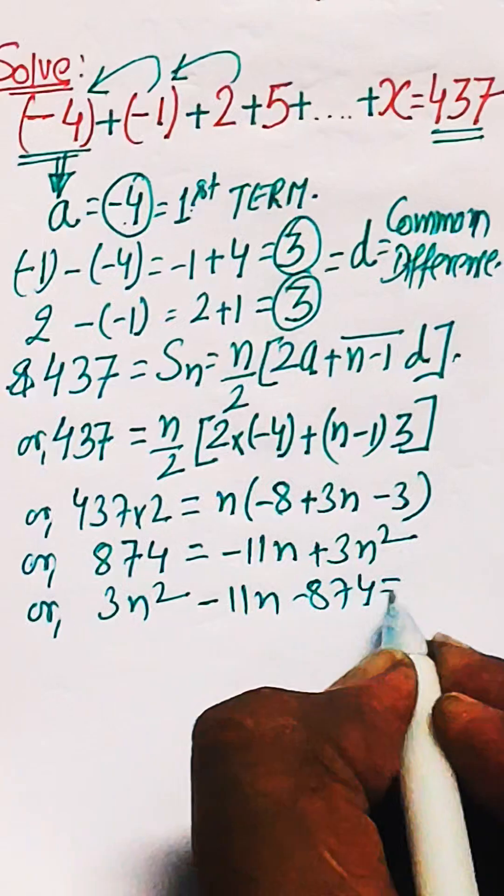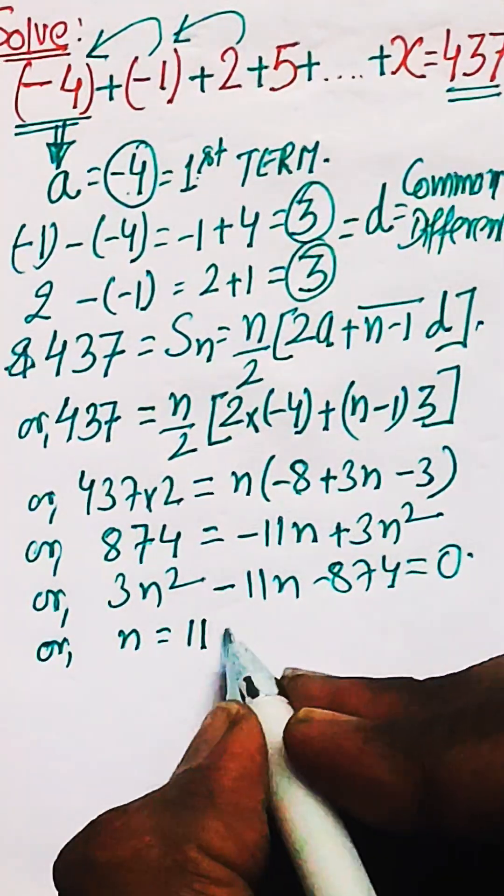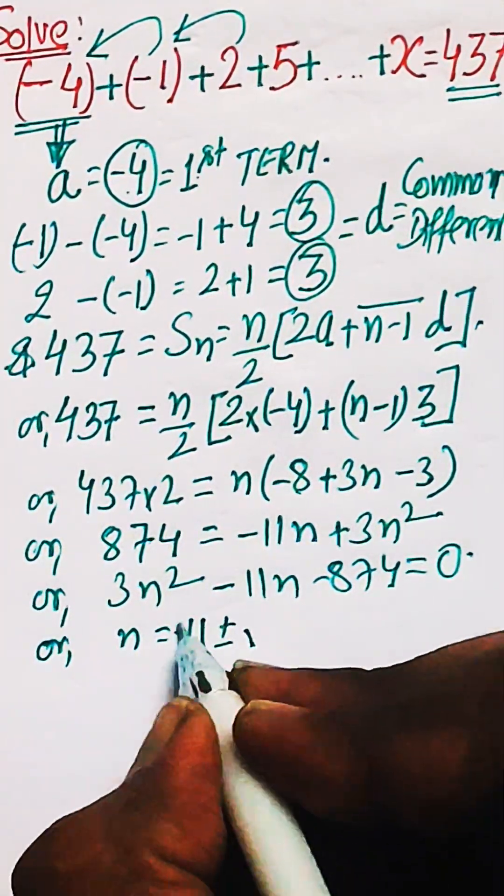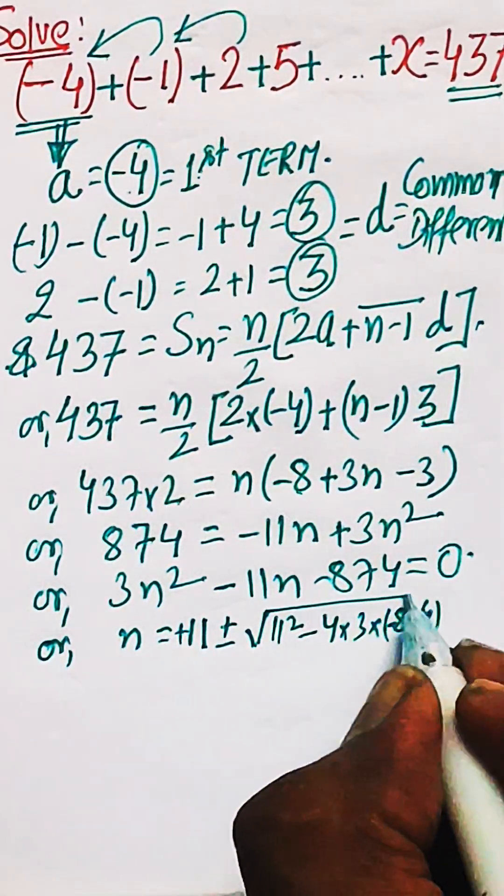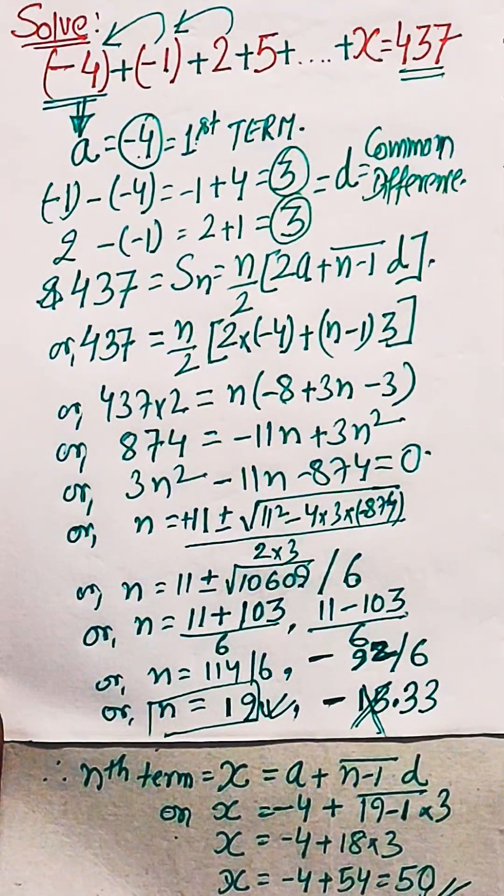Now the Nth term is x which is A plus N minus 1 into D. Put the value to get the value of x. With the positive value of N, you get the value of x as 50 which is your final answer.